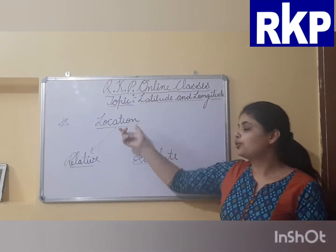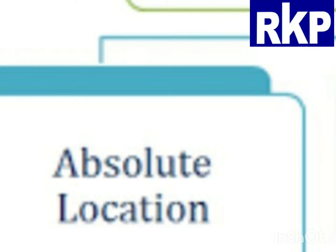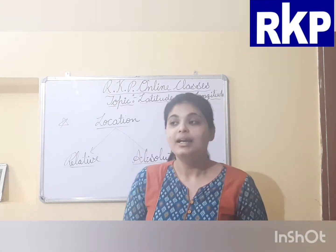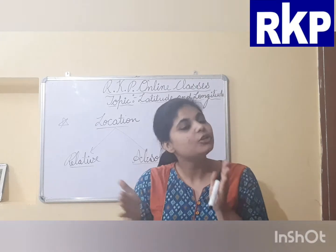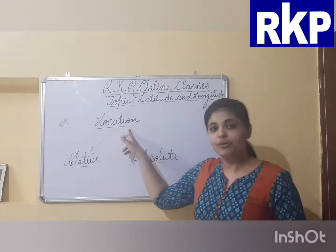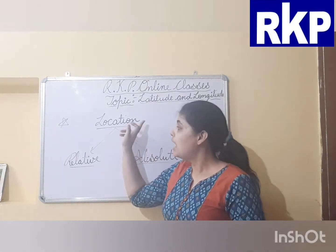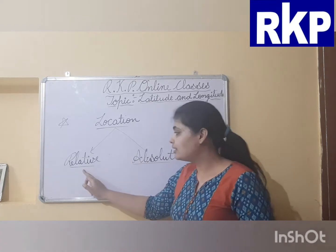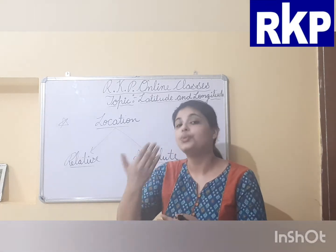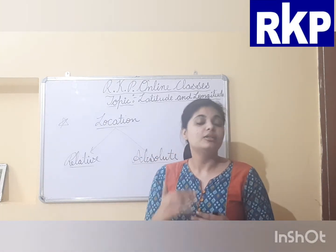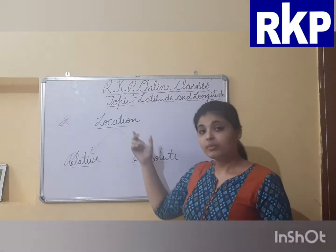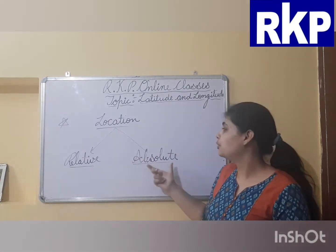Absolute location tells us the exact position — the exact position where that particular place is located. Like a home address means the exact position of our home. So this is absolute location. We have discussed location as the position of a place on the earth surface, and it is divided into two parts: relative location, which means describing the location in relation to other places, and absolute location, which tells us the exact position of any particular place.